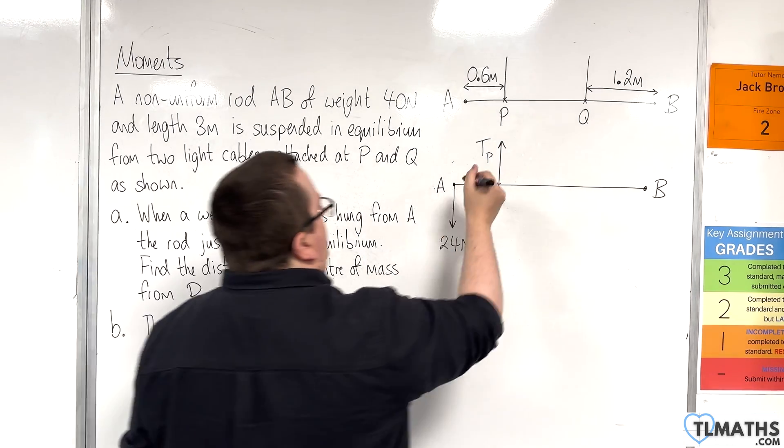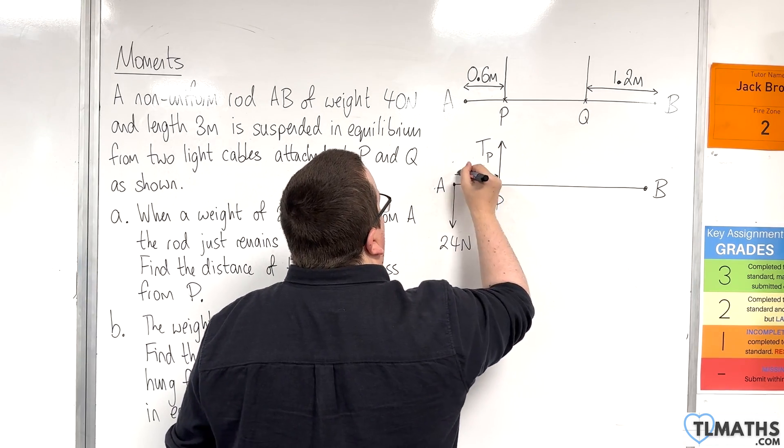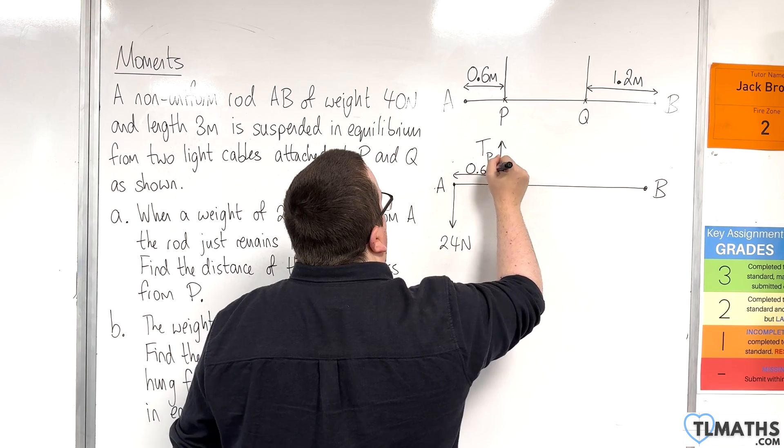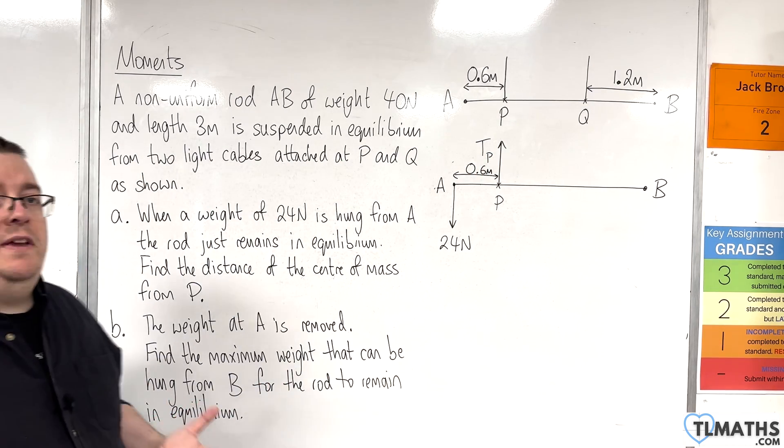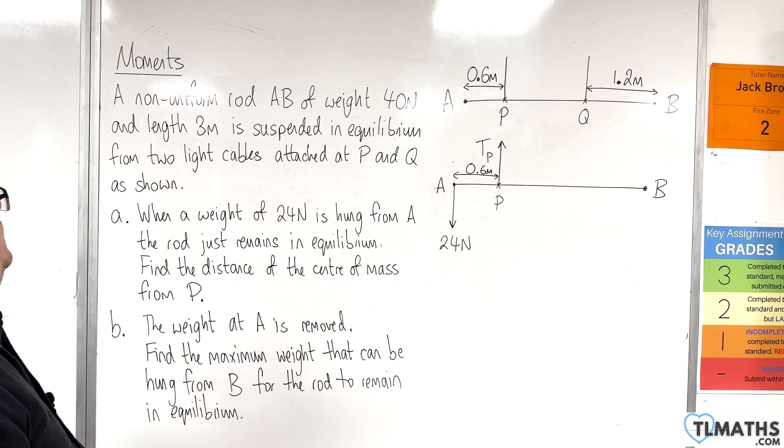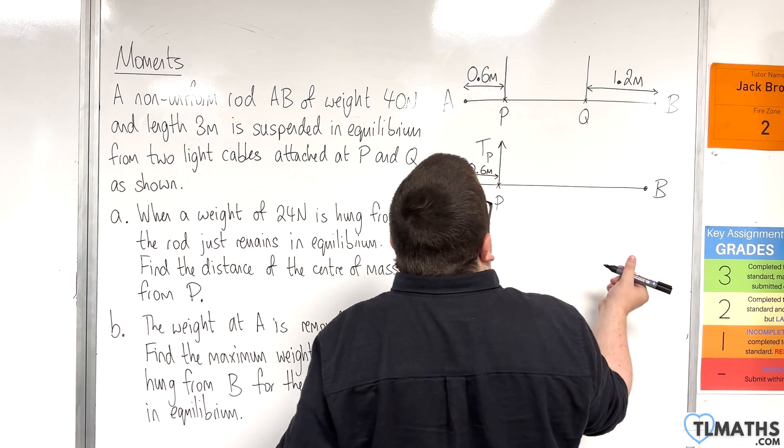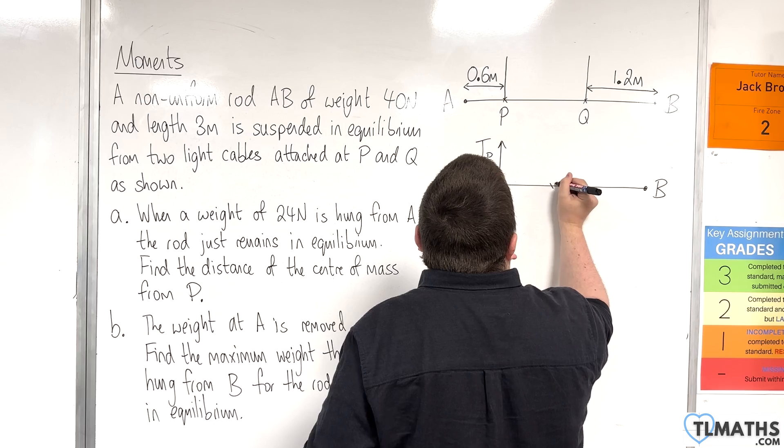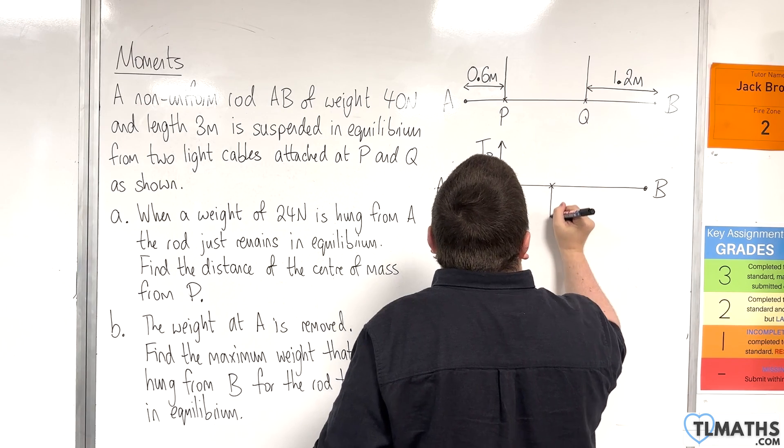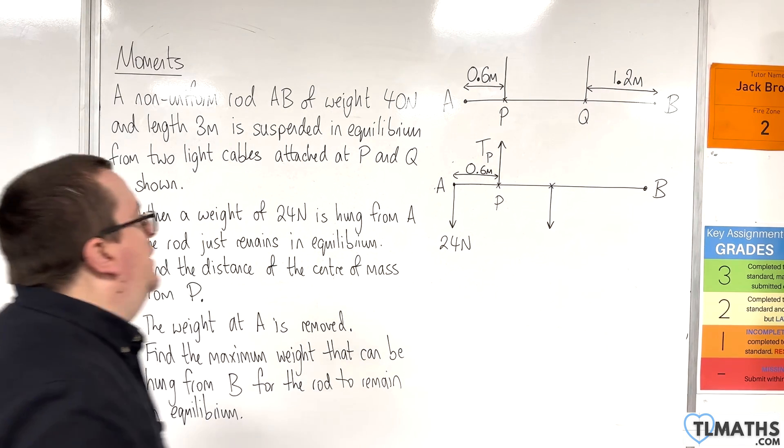So here is P and there is going to be some tension at P there. And we know that that is 0.6 metres. But we don't know where the centre of mass of the rod is. So let's just place it somewhere. So I'm going to place it here.